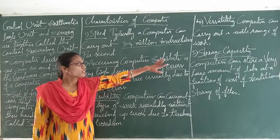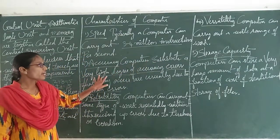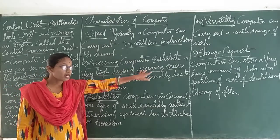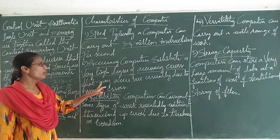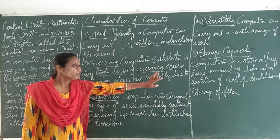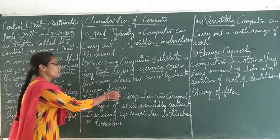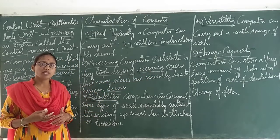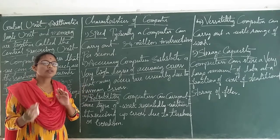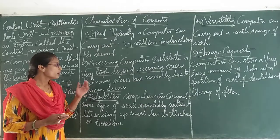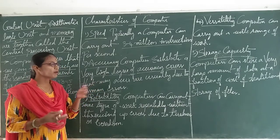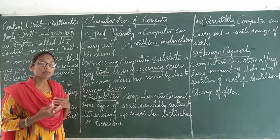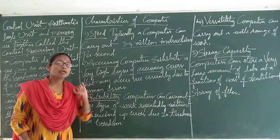Second is accuracy. Computers have a very high degree of accuracy. Errors that may occur are usually due to human errors. If you and me are doing one task or operation, we might make many mistakes, but computers will not make mistakes.